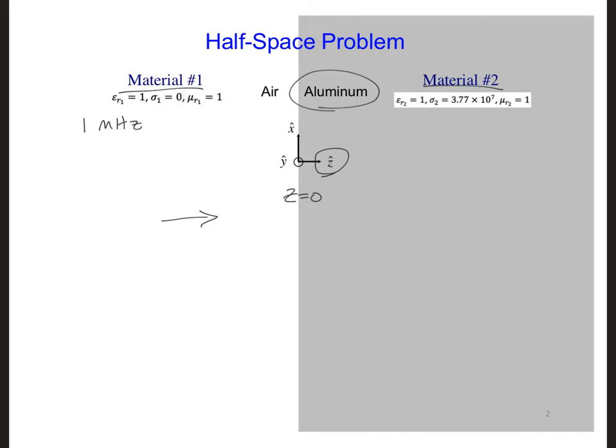The direction of propagation of the wave incident on the metal is described by gamma hat. And I'm going to put an I here for the subscript, so it's going to have an I subscript standing for incident, meaning the incident wave. Gamma is the propagation constant.